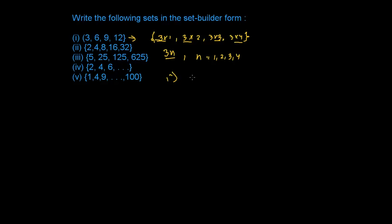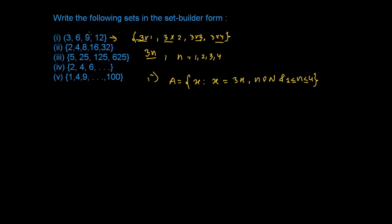So we can say: let Set A = {x | x = 3n, n ∈ ℕ, 1 ≤ n ≤ 4}. This is the way to represent a given set in set-builder form. When you substitute n = 1, 2, 3, 4, you get 3×1 = 3, 3×2 = 6, 3×3 = 9, and 3×4 = 12.